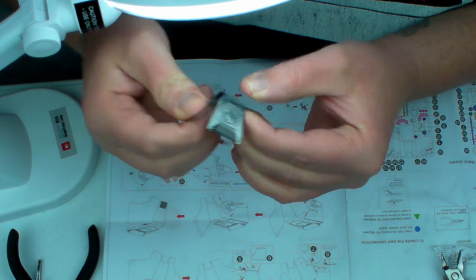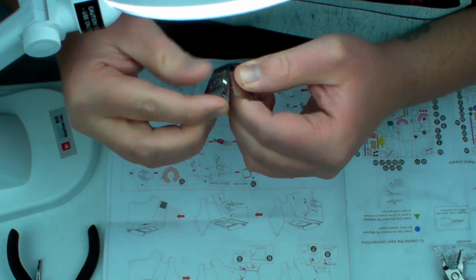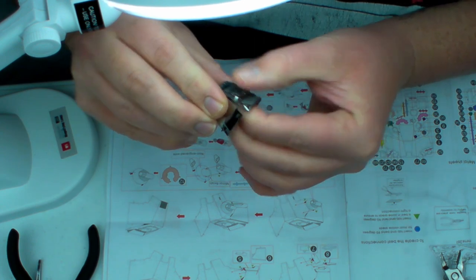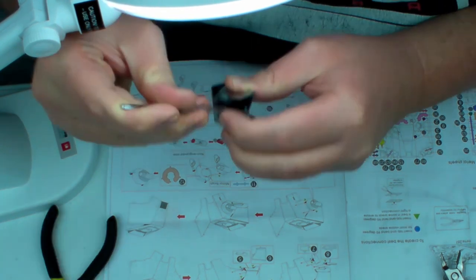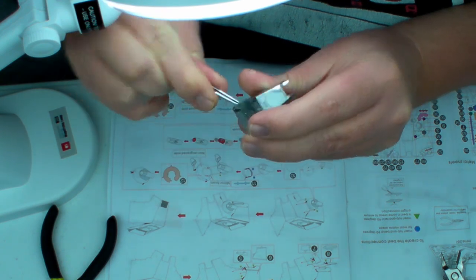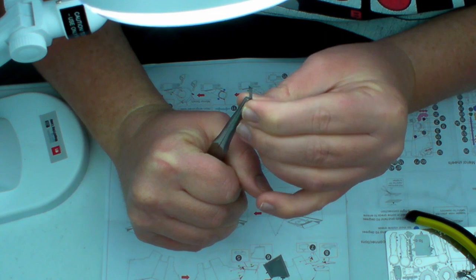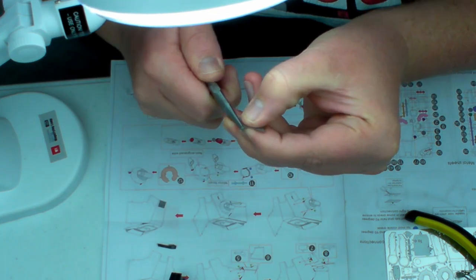I should have used the needle nose pliers to hold the center part before bending over the sides. The little area near the bottom warped just a little. I was not supposed to connect both sides just yet, only the one. I had to undo the right side later.